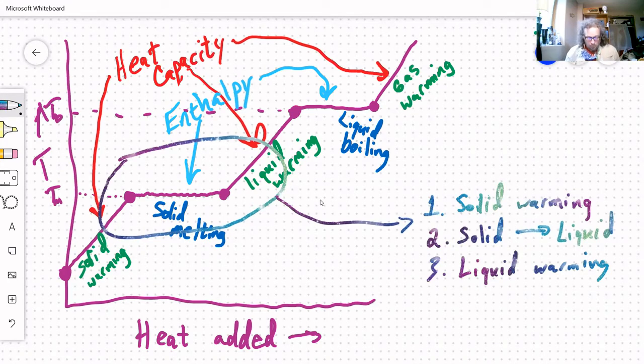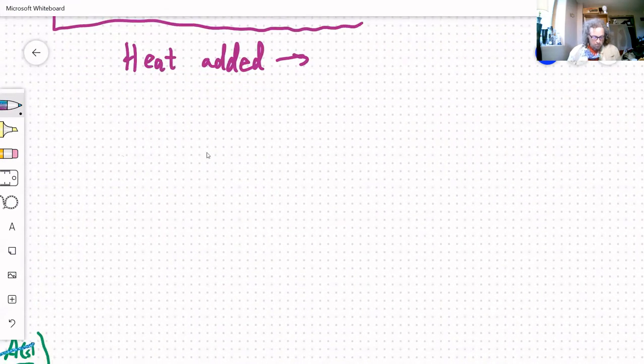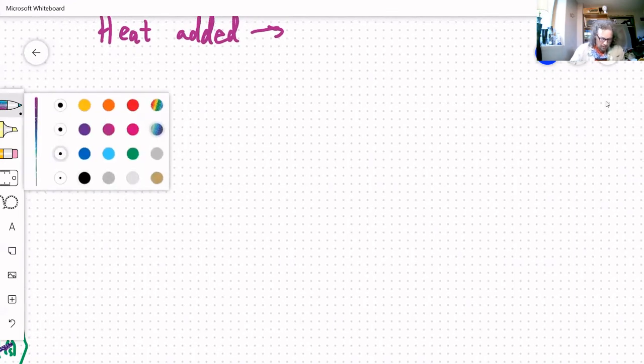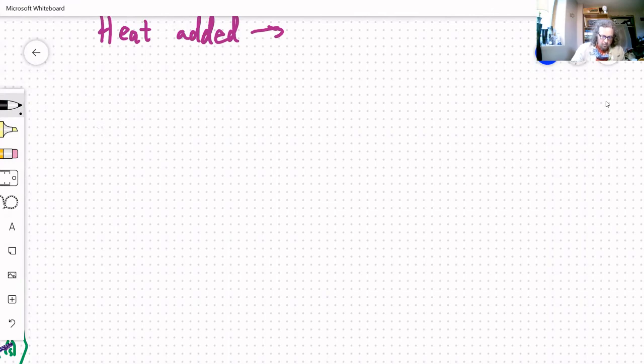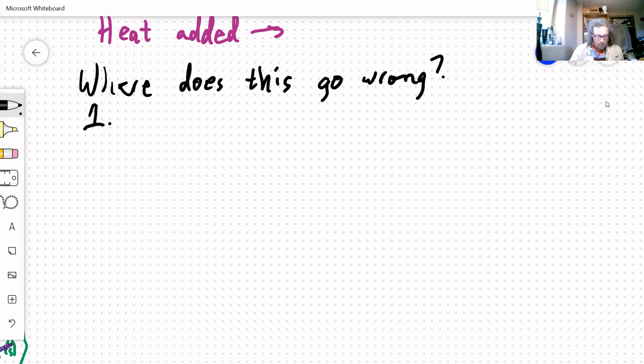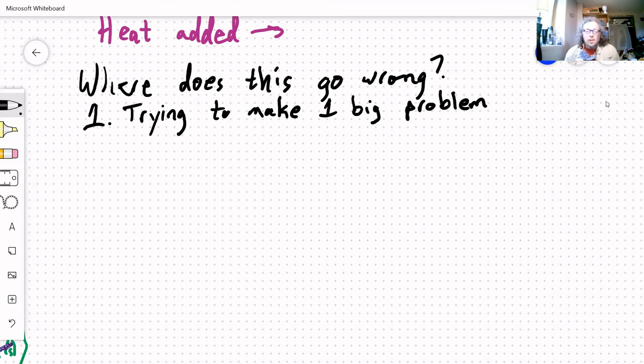So hopefully that helps. The places where I see students make life difficult for themselves most often on these types of problems. Let's make a little list. Where does this go wrong? One is students trying to make it into one problem. Now, you can do it as one big problem, but why not take it step by step? You don't eat an entire meal in one bite. Take it bite by bite. Do the same thing here. So do it step wise.